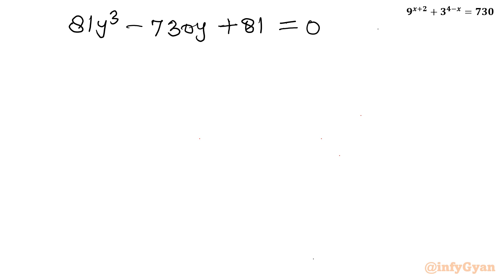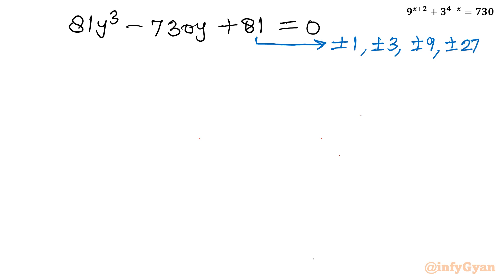This is one cubic equation. I will solve it using the rational root theorem and synthetic division method. Let us find the eligible factors of constant term 81: plus or minus 1, 3, 9, 27, 81. Similarly, the leading coefficient also gives the same factors: plus or minus 1, 3, 9, 27, and 81.